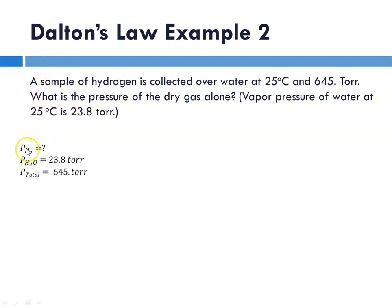So now, identifying variables. Partial pressure of hydrogen is what we want. That would be the dry gas. The pressure of water at that temperature is 23.8, and the total pressure in the room is 645. So our p total is equal to the partial pressure of water plus the gas that we collected. So the pressure of the hydrogen is going to be p total minus p water.